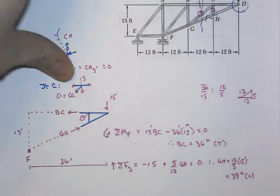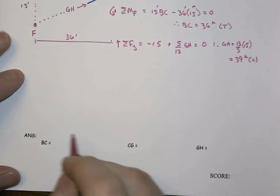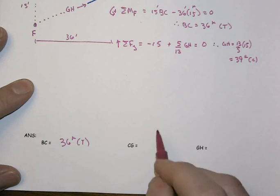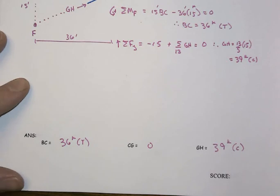So our final answers here, then, are that BC is 36 kips tension, CG is 0, and GH is 39 kips compression. And yes, it absolutely matters whether you get that right tension or compression.